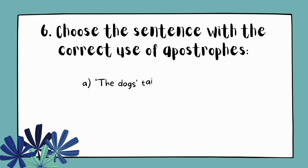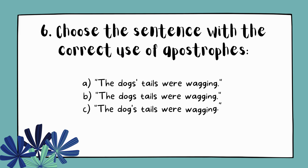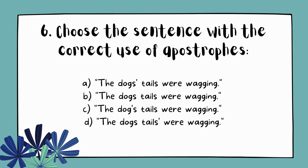Question 6. Choose the sentence with the correct use of apostrophes. A. The dog's tails were wagging. B. The dog's tails were wagging. C. The dog's tails were wagging. D. The dog's tails were wagging.